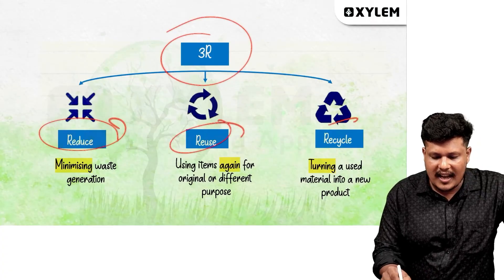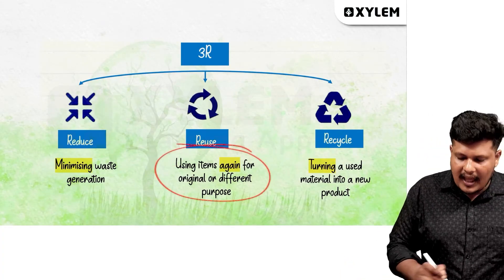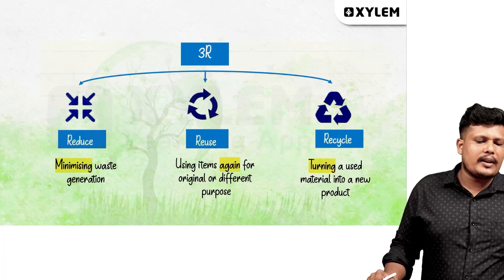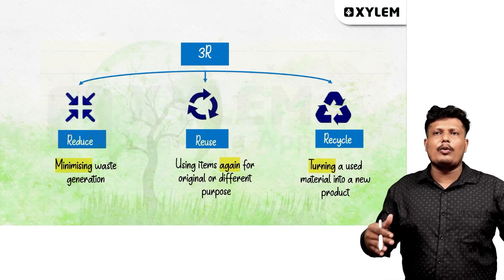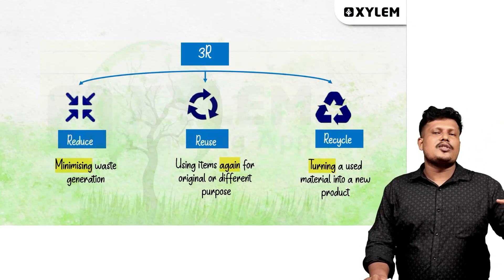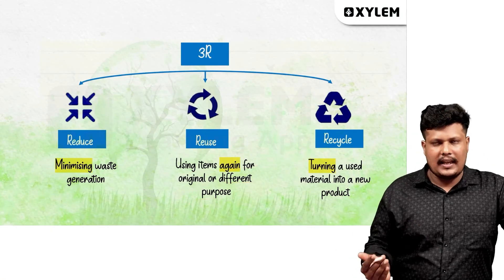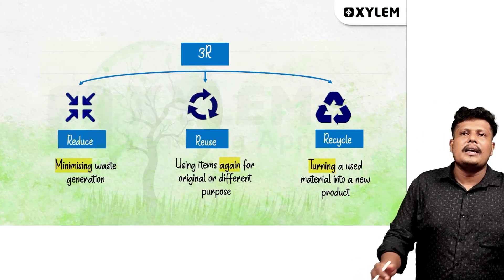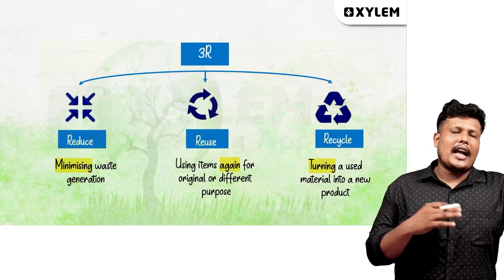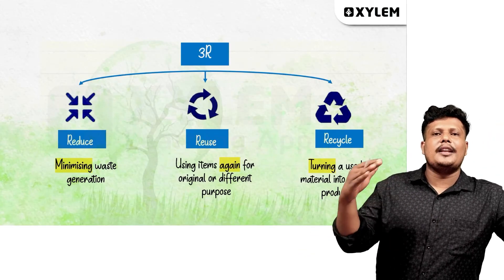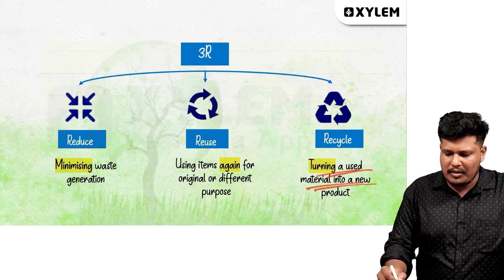The 3R concepts are Reduce, Reuse, and Recycle. Reduce means waste generation is minimized — for example, not using plastic. Reuse means using an item again for its original or a different purpose — for example, reusing a mug. Recycle means processing used material — like melting down a plastic pot to get a new material — turning a used material into a new product.